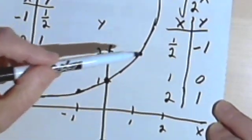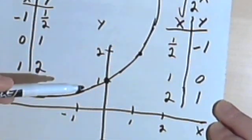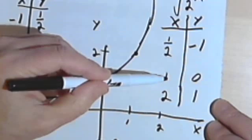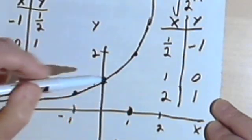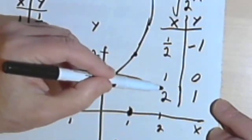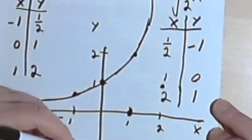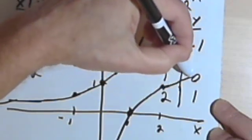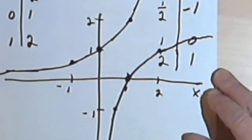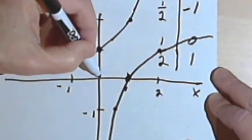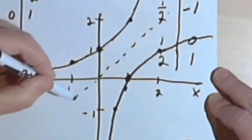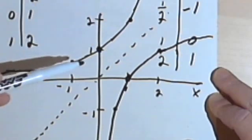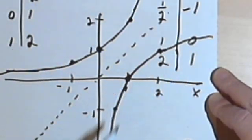And now we'll go on to the logarithmic function, which should be the inverse of what I've just drawn. When x is 1 half, y is negative 1. When x is 1, y is 0. That's on the horizontal axis. And when x is 2, y is 1. So there we have it. It's an inverse function. If I had a diagonal line, the kind you would get if you had y equals x, then I could see that that one function is reflected across that line to form the other function.